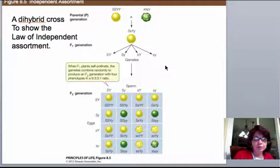Do this really big cross and we get a 9 to 3 to 3 to 1 phenotype ratio, which we'll talk about more in class. Thank you.